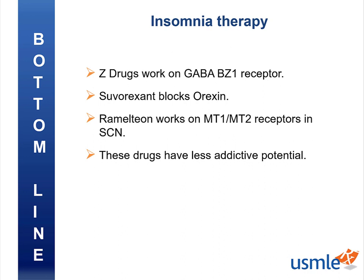So what did we learn today? We learned that Z drugs work on the GABA BZ1 receptor. We learned about suvorexant and how it blocks orexin and its connection to narcolepsy. We learned about ramelteon, which works on MT1 and MT2 receptors in the suprachiasmatic nucleus and helps regulate your circadian rhythm. All these drugs, compared to other CNS depressants like benzodiazepines, have less addictive potential — but remember, that does not mean no addictive potential. I hope you found this lecture useful. Please give a thumbs up below, and I hope to see you guys soon.